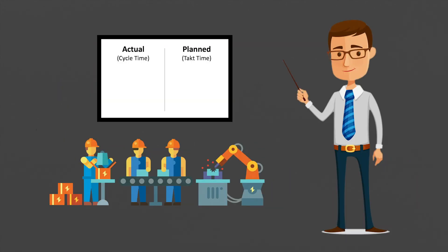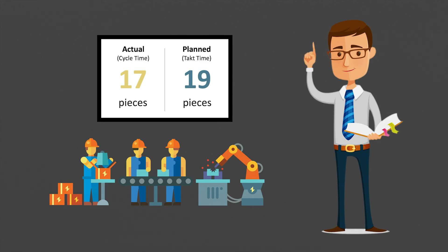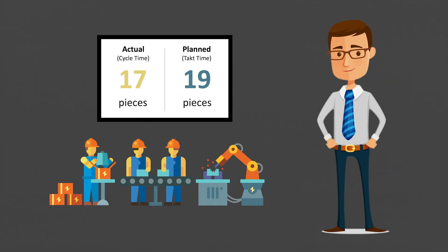For that reason, many manufacturers use monitors to visualize the actual number of assembled parts compared to the planned number of parts. The planned number of parts increases every 30 seconds automatically depending on the takt time, whereas the actual number of parts increases every time a product has been assembled according to the cycle time. By doing so, it is pretty transparent to see if we work according to the customer demand or deviate from it.